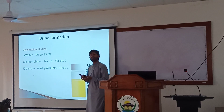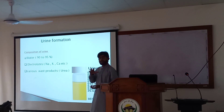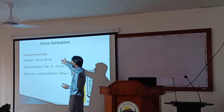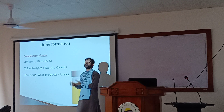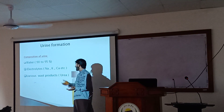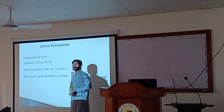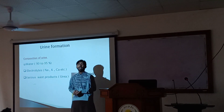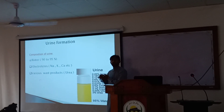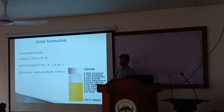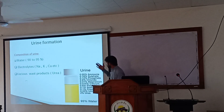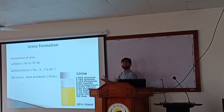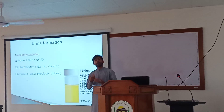What is the composition of urine? The main component is water — about 93–95% of urine is water. The solutes include electrolytes such as sodium, potassium, and calcium. There are also waste products — urea and creatinine are the most important features of urine composition.